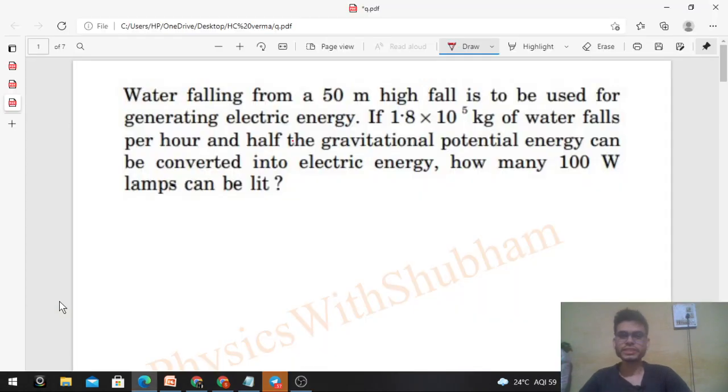Okay, hi everyone. So today let's discuss this interesting problem. It says water falling from a 50 meter high fall is to be used for generating electric energy. If 1.8 × 10⁵ kilograms of water falls per hour and half the gravitational potential energy can be converted into electric energy, how many 100 watt lamps can be lit?